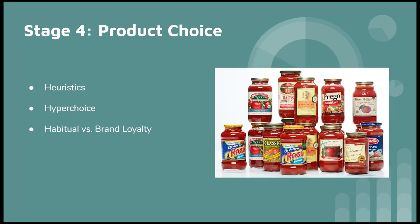So for stage four, product choice, like I said before with brand loyalty, you get into a habitual response where you will just buy the same thing out of habit. However, loyalty is much better than habit because habit changes.